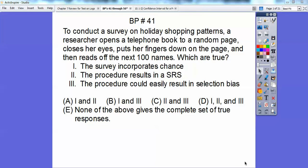To conduct a survey on holiday shopping patterns, a researcher opens a telephone book to a random page, closes her eyes, and puts her finger down on the page, then reads off the next 100 names. Which is true? This survey incorporates chance. Well, I suppose there's some chance to that because she's doing it on a random page. This procedure results in an SRS. Well, I don't think so. I'll talk about that in a second. This procedure could easily result in selection bias. I do think it's that also.